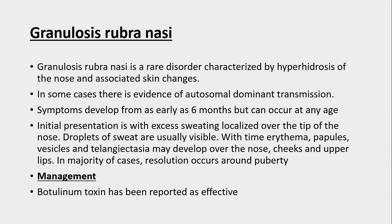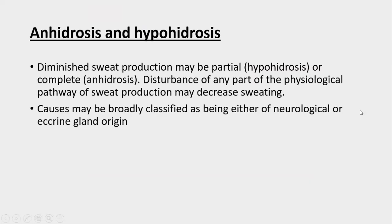Granulosis rubra nasi is a rare disorder characterized by hyperhidrosis of the nose and associated skin, with some evidence of autosomal dominant transmission. Symptoms develop from as early as six months but may occur at any age. Initial presentation is with excessive sweating localized over the tip of the nose, with visible sweat droplets. Over time, erythema, papules, vesicles, and telangiectasias develop over the nose, cheek, and upper lip, and in the majority of cases resolution occurs around puberty. Management is best achieved with botulinum toxin.